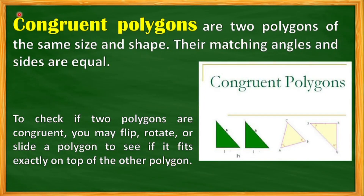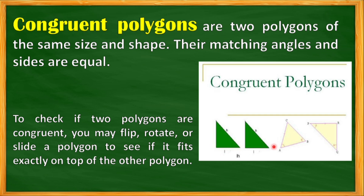Lesson number 5: Congruent Polygons. Congruent polygons are two polygons of the same size and shape — their matching angles and sides are equal. To check if two polygons are congruent, you may flip, rotate, or slide a polygon to see if it fits exactly on top of the other polygon.